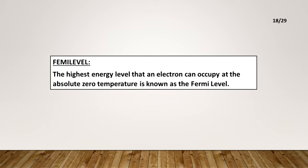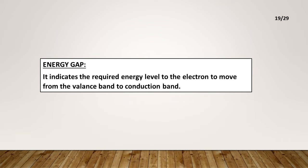Fermi level: The highest energy level that an electron can occupy at absolute zero temperature is known as the Fermi level. Energy gap: It indicates the required energy for an electron to move from the valence band to the conduction band.